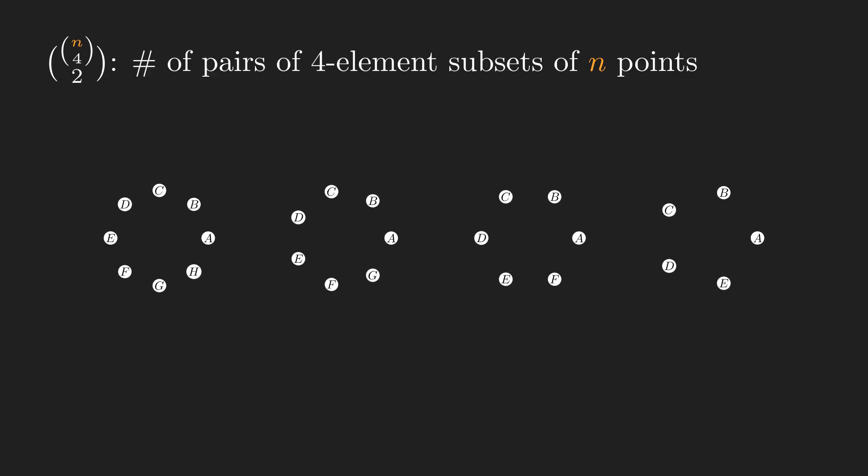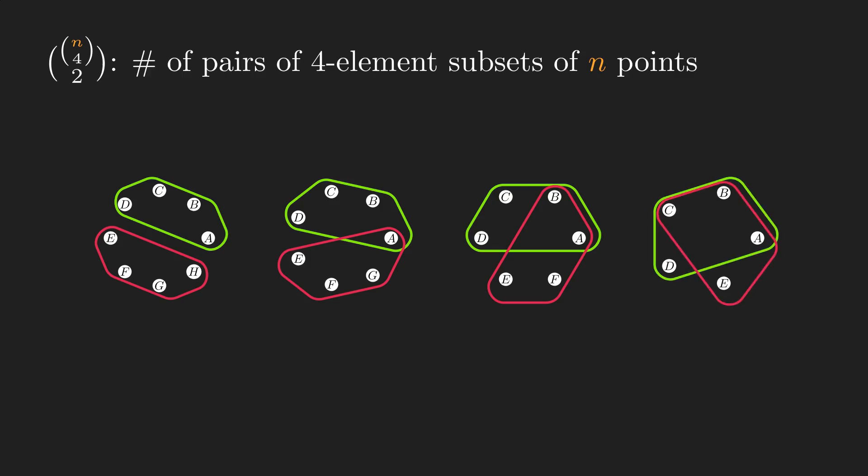Let's visualize it to make it more understandable. You can see 4 different cases where the number of shared points varies from 0 to 3. I won't go into the details of counting each case, but here's the answer if you want to practice on your own.